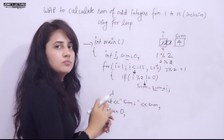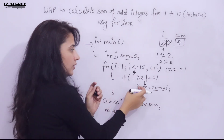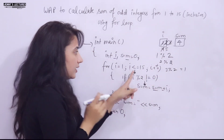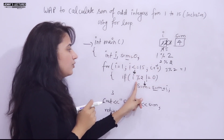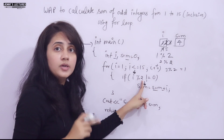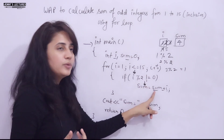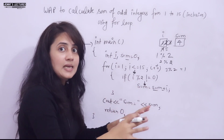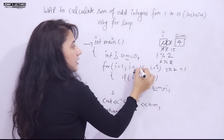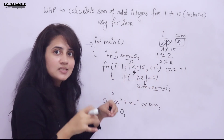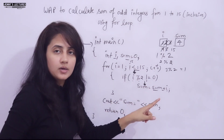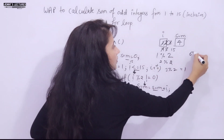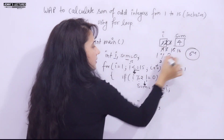i++ makes i = 4. 4 % 2 = 0, condition false — skip. i++ gives i = 5. 5 % 2 = 1, condition true — sum updates again. This continues. Please dry-run the program yourself up to i = 15. When i = 15: 15 % 2 = 1, condition true, sum is updated. Finally, sum becomes 64.